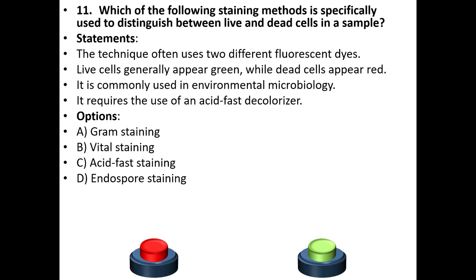Eleventh question. Which of the following staining methods is specifically used to distinguish between live and dead cells in a sample? Statements: The technique often uses two different fluorescent dyes. Live cells generally appear green while dead cells appear red. It is commonly used in environmental microbiology. It requires the use of an acid-fast decolorizer.